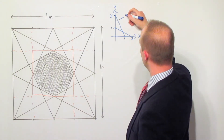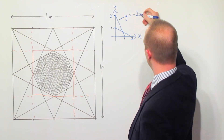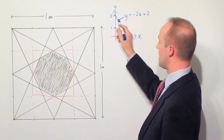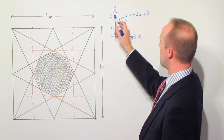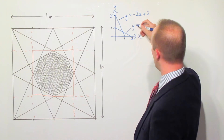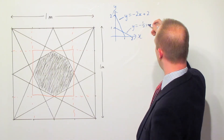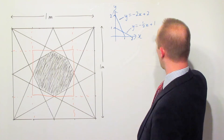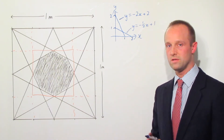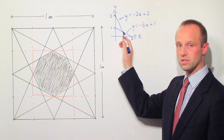This one is y equals minus 2x plus 2 — the gradient is minus 2 and the y-intercept is 2. This one here is y equals minus a half x plus 1. We've got two equations for two lines and we're interested in the point where they cross.